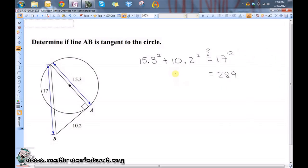Because 338.13 does not equal 289. Because the sum of these two squared does not equal that number squared, this can't be a right triangle.